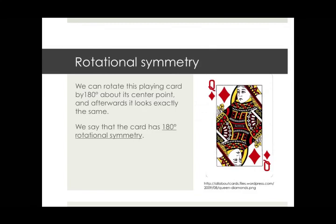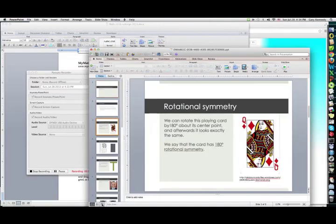To illustrate this, let's look at this standard playing card. This is a queen of diamonds from a standard 52 card playing deck. And we can take this card and we can rotate it by 180 degrees about its center point. And afterwards, it will look exactly the same. In fact, let me illustrate that. Here is that card again, as you can see.